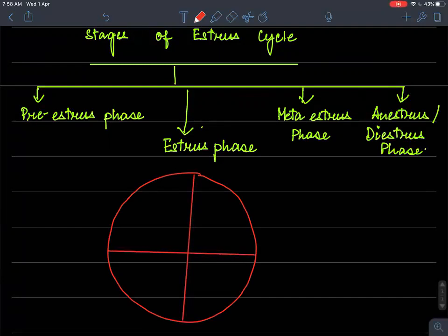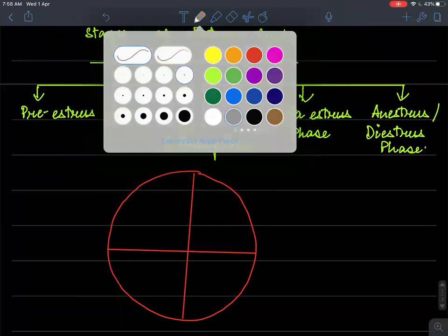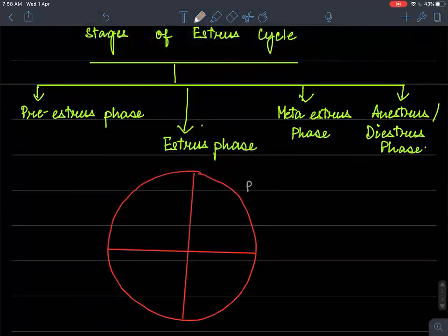So if we divide these four stages into four parts, we can see that it starts with a pre-estrus, followed by estrus, followed by meta-estrus, and the last stage is anestrus.